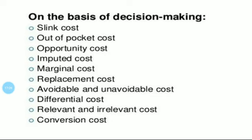Third, opportunity cost. Opportunity cost is the value of a benefit sacrificed in favor of an alternative course of action. It is the cost of the best alternative foregone, or the cost of the foregone alternative. It is the value of benefits foregone when one decision alternative is selected over another. For example, if an owned building is proposed to be used for a new project, the likely rent of that building if it were rented out is the opportunity cost.